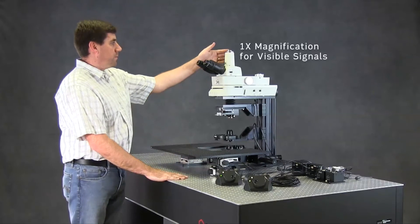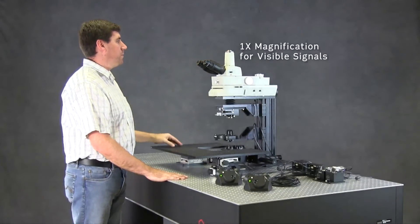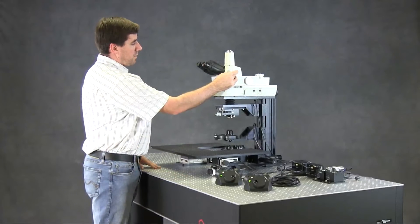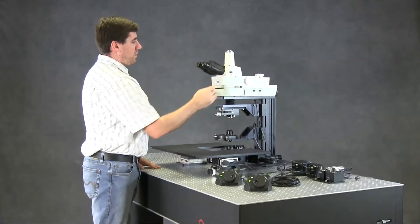The front camera port has C-mount threads that accept any industry standard camera, and a knob on the side sends an image to either the camera or the trinoculars.